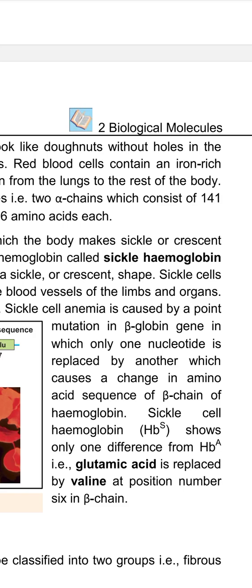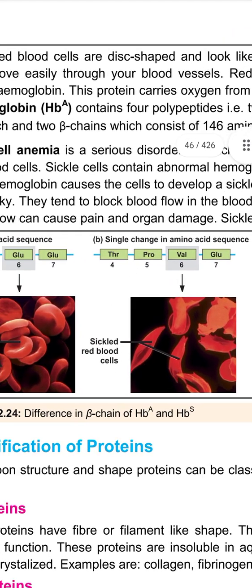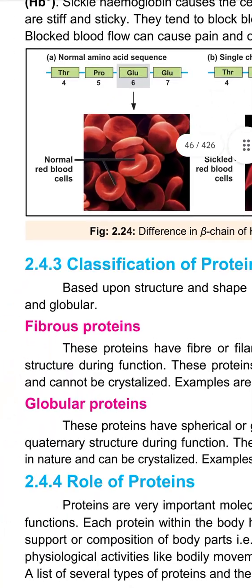Sickle cell hemoglobin shows only one difference from normal hemoglobin A: glutamic acid has been replaced by valine at position number 6 in the beta chain. This single amino acid change causes red blood cells to develop a sickle shape, and plaque-like formations start to form.